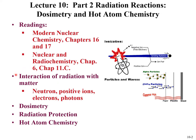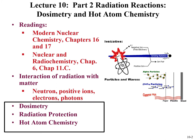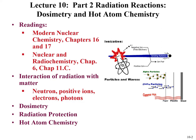In the first part, we discussed the interaction of radiation with matter, exploring the role of neutrons, positive ions, electrons, and photons, and similarities and differences in their interactions. In this lecture, we'll focus on dosimetry, how we quantify that interaction, how we use that understanding in radiation protection, and we'll end with a discussion on hot atom chemistry, where a nuclear reaction induces a chemical reaction.